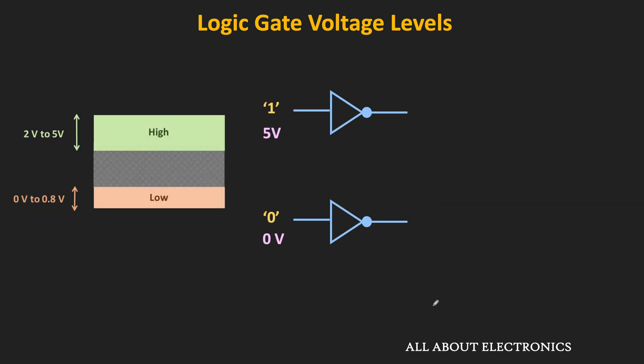For example, when the input voltage is between 2V and 5V, then the logic gate will consider it as logic 1. Similarly, when the input voltage is between 0 and 0.8V, then the logic gate will consider it as logic 0. And if the voltage is between these two ranges, then we do not know whether it will be considered as logic 1 or logic 0. So basically, that range is the undefined range.